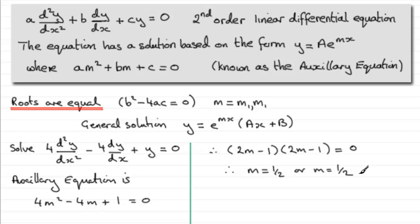is essentially going to take on this form: y equals e to the power mx, so that would be e to the power of half x, and that's all multiplied